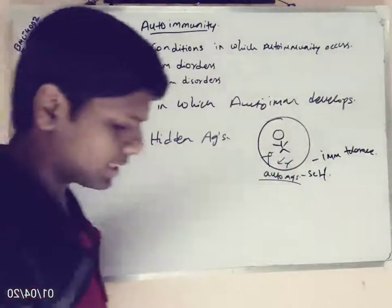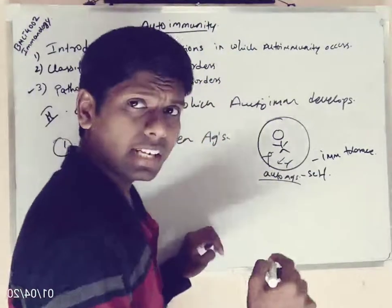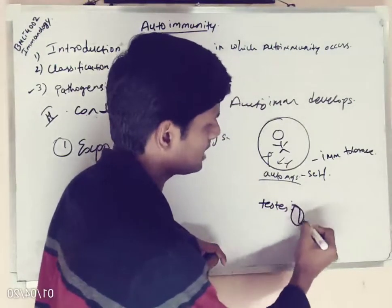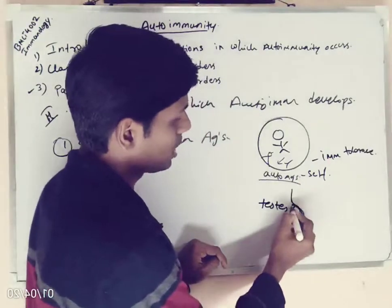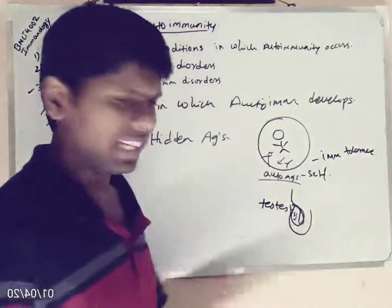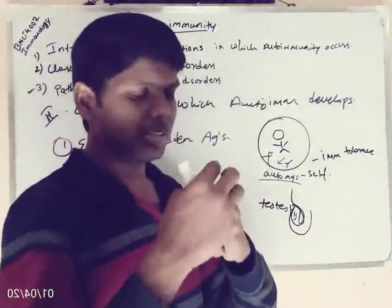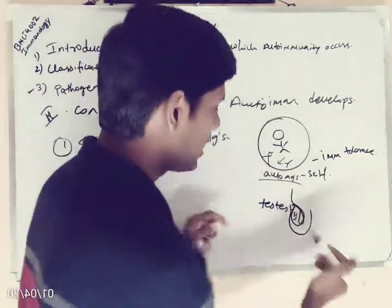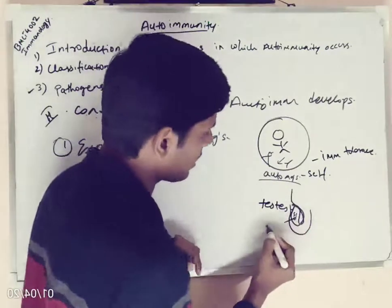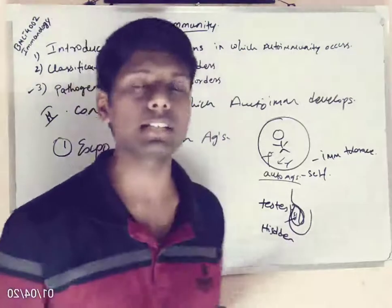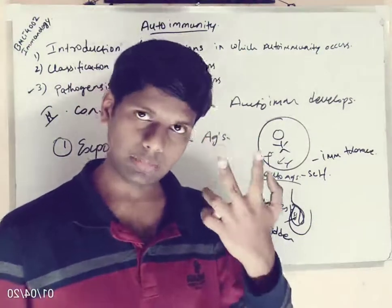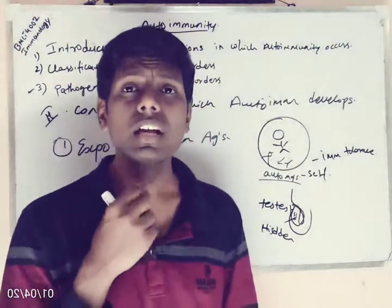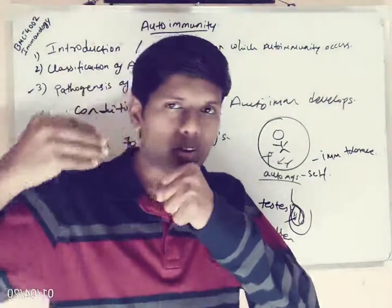Exposure to hidden antigens means there are certain cells and tissues in our body — for example, testes. Sperm cells in the testes are never in direct contact with the body's immune system, so the immune system doesn't know what these sperm antigens are. These are called hidden antigens. The best examples of hidden antigens are sperm, the retina of the eye, and thyroglobulin in the thyroid gland — all hidden from our immune system.